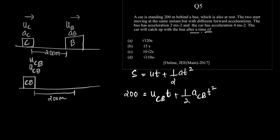We are asked to find out the time. What is ucb? ucb is uc minus ub, which is equal to 0, since both of them are starting from rest.